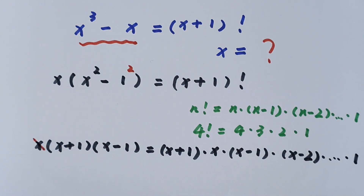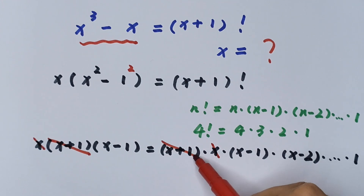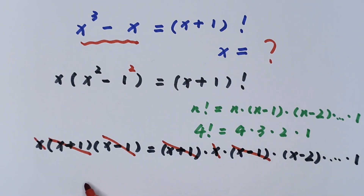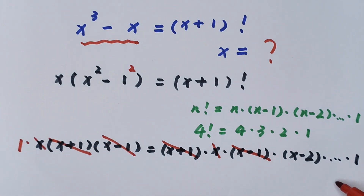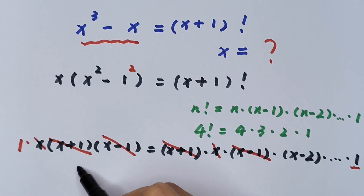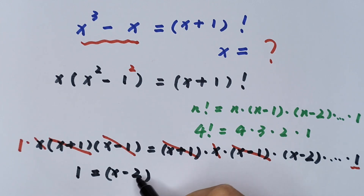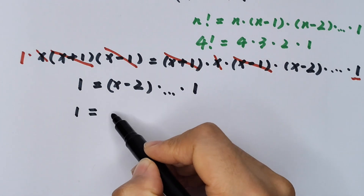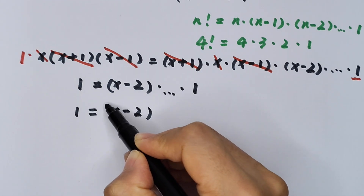x cancels with x, (x + 1) cancels with (x + 1), and (x - 1) cancels with (x - 1). The left side simplifies to 1, so 1 = (x - 2) × ... × 1, which means 1 = (x - 2)!